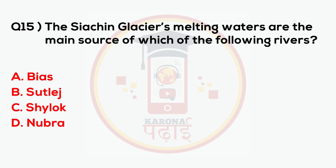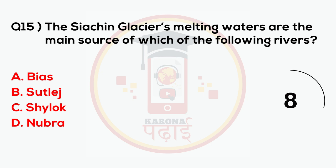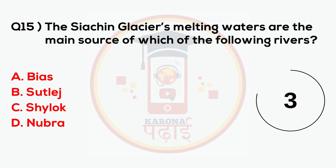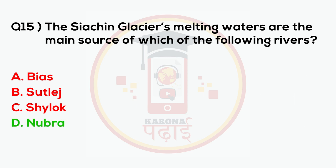Siachen Glacier's melting water is the main source of which one of the following rivers? Nubra.